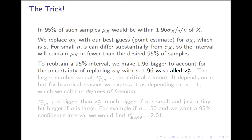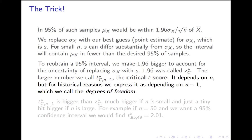Remember, 1.96 was called the critical z value, z* sub c, where c is the confidence level — a different one for each confidence level. This larger number we're going to call the critical t score, t* sub c. It's going to depend also on the sample size. For historical reasons, instead of expressing it as depending on the sample size, we express it as depending on the sample size minus 1, which we call the degrees of freedom. Later, we'll start to see what degrees of freedom mean, and if you go further in statistics, it becomes an important concept.